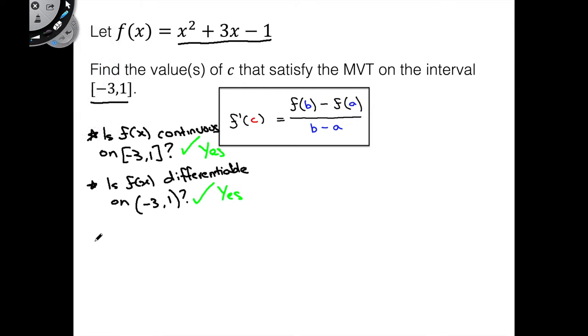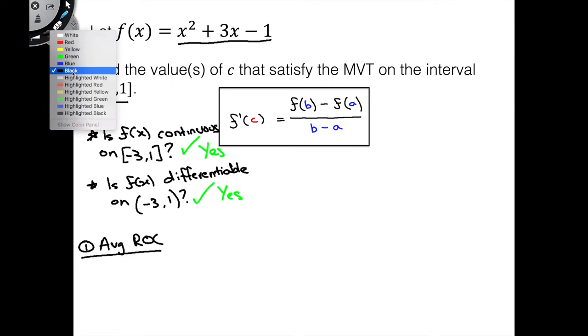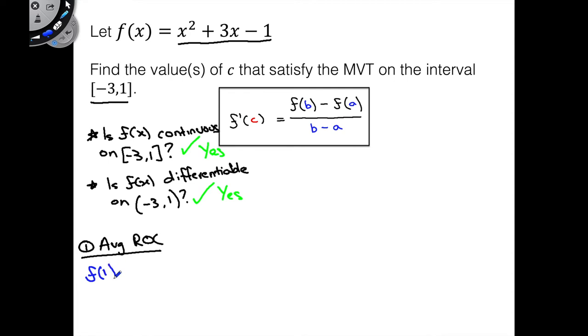Okay, and now we will go on to our first step of actual math, which is going to be to find this average rate of change first. To do this, we will need to find f(1) - f(-3) over 1 - (-3), okay?